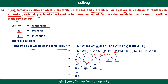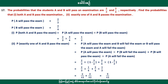This is the probability that students A and B pass in the same way. We will find the probability that both A and B pass the examination. We will also find the probability that exactly one of A and B passes the examination.